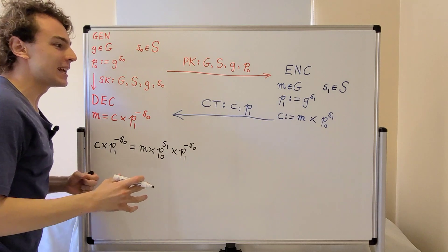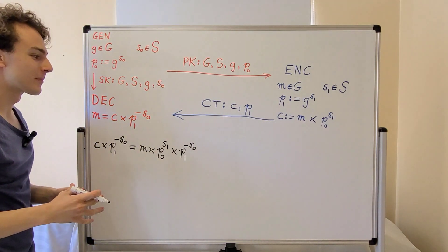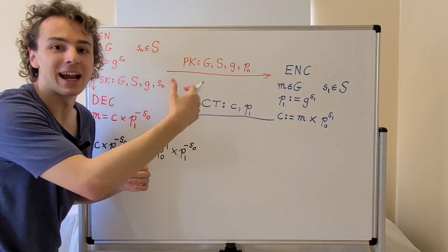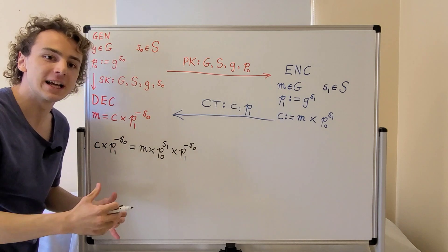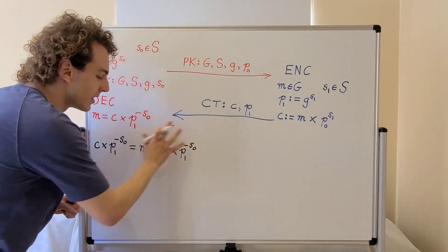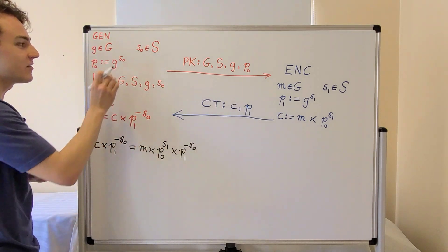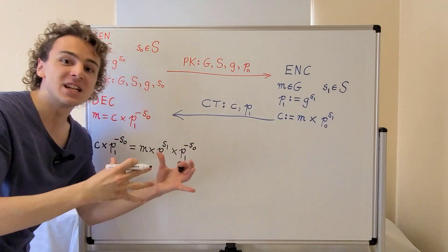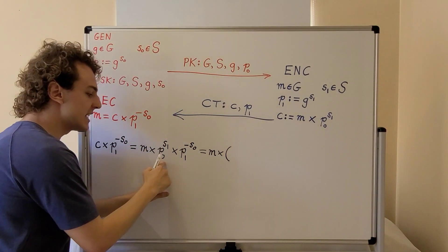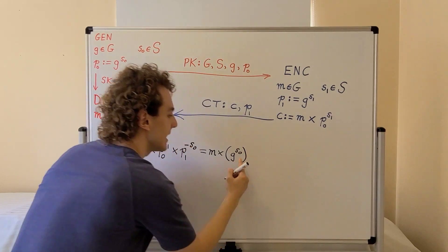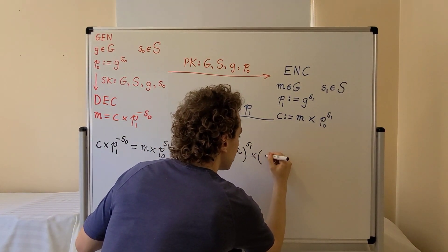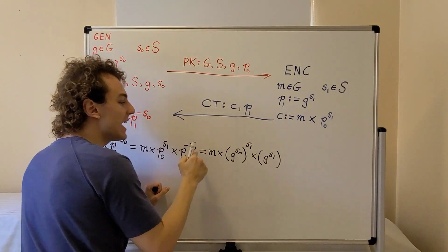This concept is the basis for Diffie-Hellman key exchange, but that is a specific case using multiplication mod a number. Here we are dealing with the generalized discrete logarithm problem and a far more general group operation. Substituting the definitions of the public values in terms of the generator, we get: the message times g to the power of s0, raised to the power of s1, multiplied by g to the power of s1 to the power of minus s0.